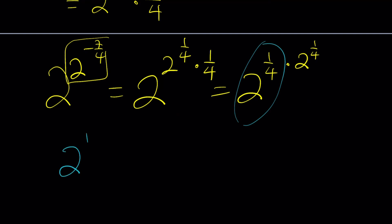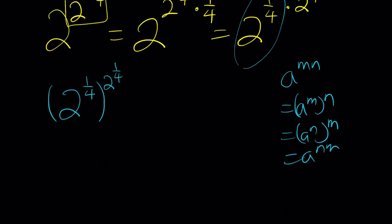But now I know that this is equal to 2 to the power 1 fourth times 1 fourth which can be written as 2 to the power 1 fourth times 2 to the power 1 fourth. We can put these two guys together and write this as 2 to the power 1 fourth to the power 2 to the power 1 fourth because if you have a to the power m n you can write it as a to the power m to the power n.